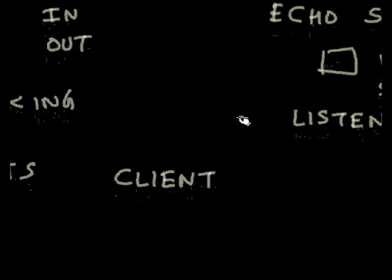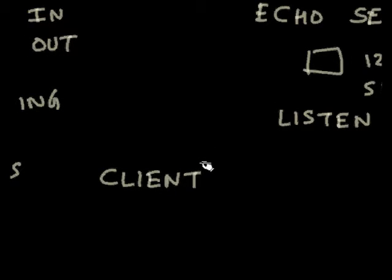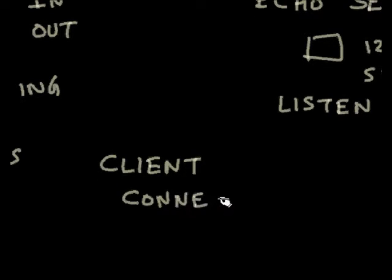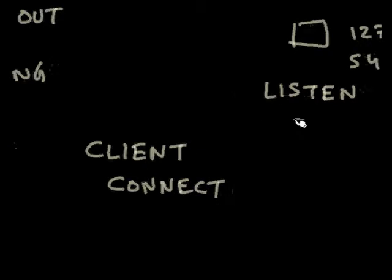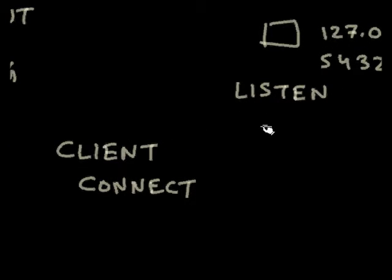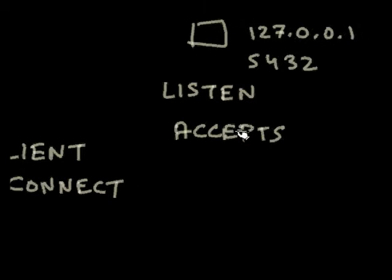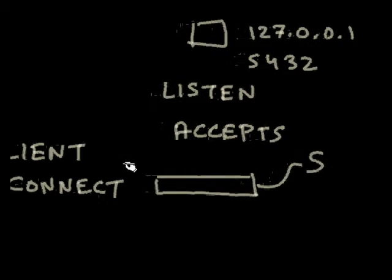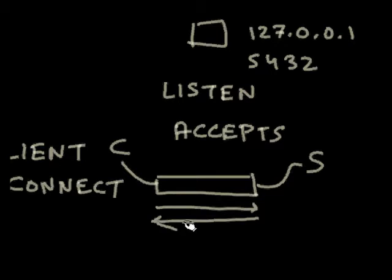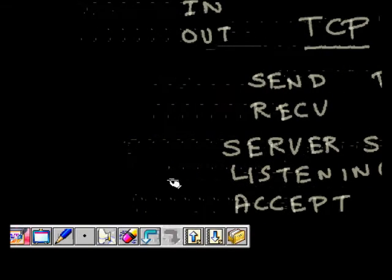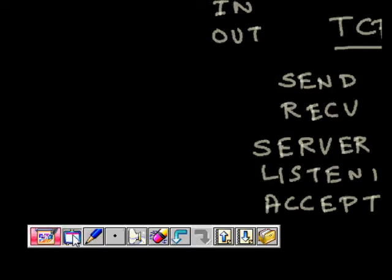We start the client also, and tell the client that a service is running on the server's IP address and port number. The client tries to connect to the server, the server is listening and accepts the connection. Now both of them have a socket and can send data to and fro.